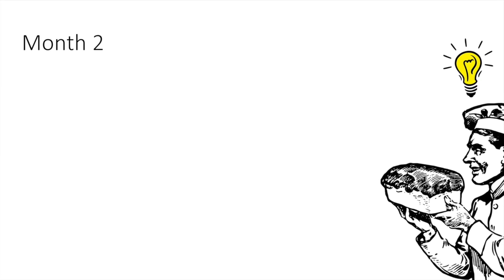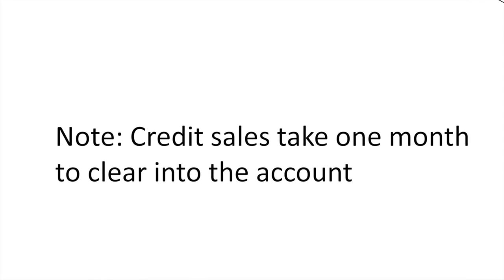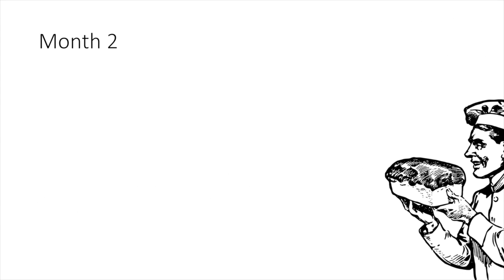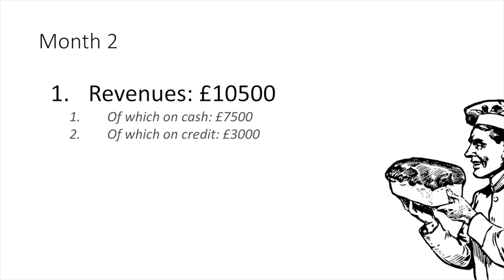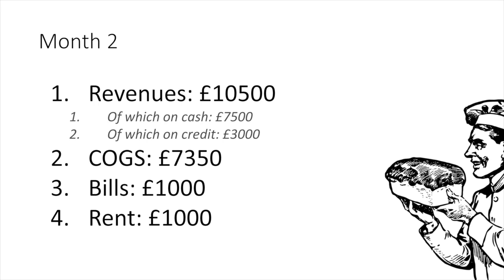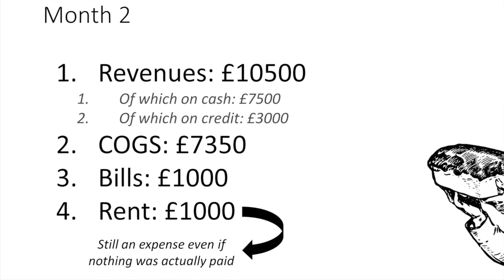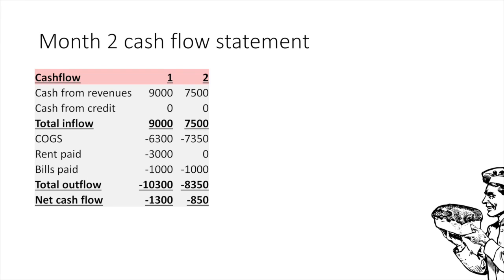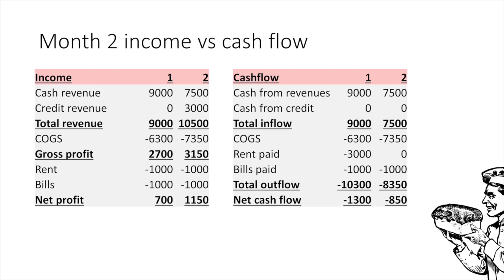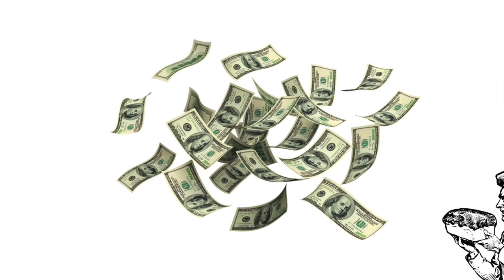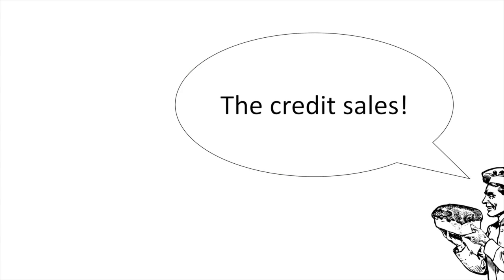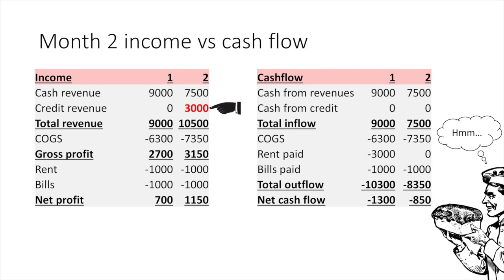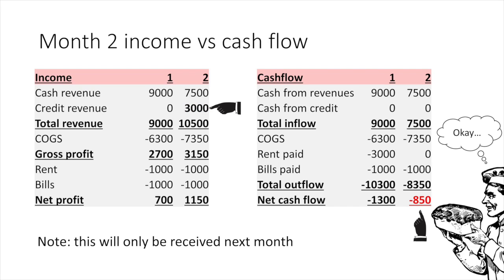In the second month, John had a new idea. In order to attract more customers, he started taking credit cards as a method of payment. The problem is that sales made on credit take one month before they are transferred to John's account. The figures for month 2 are £10,500 in revenues, of which £7,500 in cash and £3,000 on credit, and £7,350 as the cost of goods sold. The bills and rent are still the same as last month. Even though John didn't actually pay any rent in month 2, it is still an expense used during the period and should be reflected on the income statement. The cash flow statement reveals a loss again and the income statement shows an even greater profit — John only received £7,500 of revenues in cash, while the remaining £3,000 are only going to be received next month, explaining the negative cash flow.